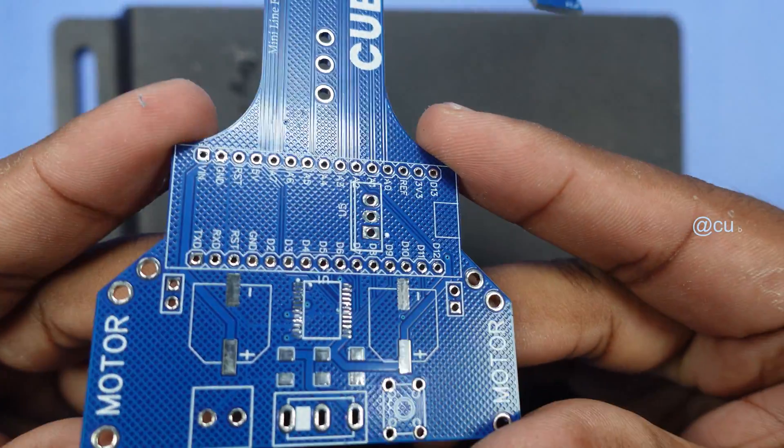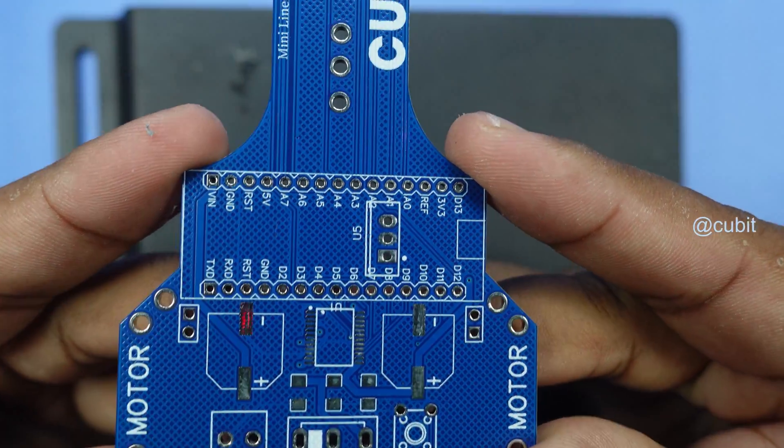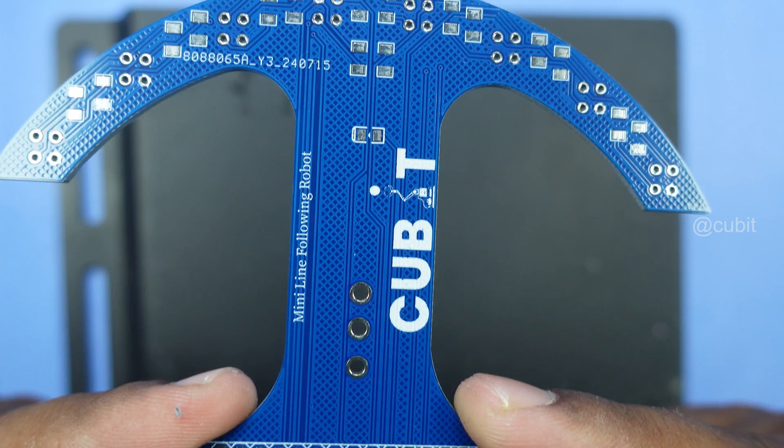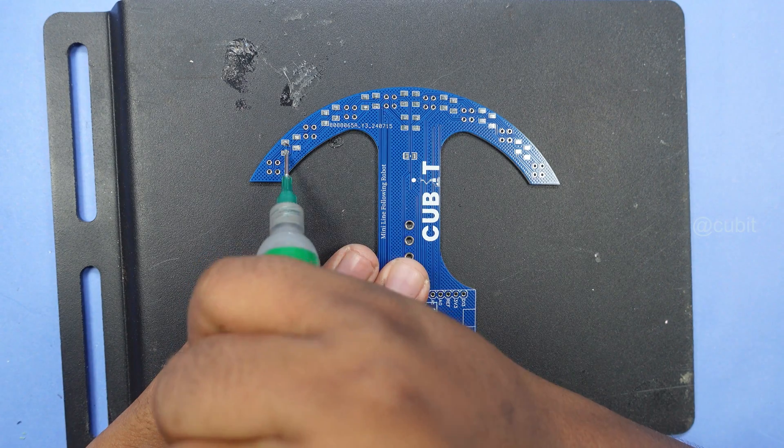This is our MiniLine Following Robot PCB. In today's video, we'll go through the assembly process for our MiniLine Following Robot series. Let's get started.